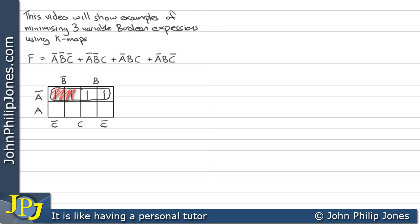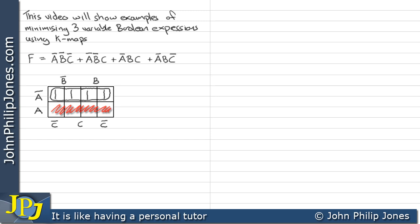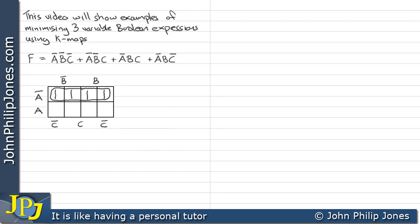If I shade this particular area of the loop we can see it is in not B, and if I shade this particular area we can see it is in B. That is an overlap across those two variables so we discount those. If I look at that area we can see that they are both in the not C area, and if I shade this in we can see it's in the C area — another overlap, so we discount those variables. If I look at the area of A we can see that no part of the loop is actually in A, so we discount that variable. Shading in the entire loop, we can see it is all in not A. Because it is all in not A, this minimizes to not A.